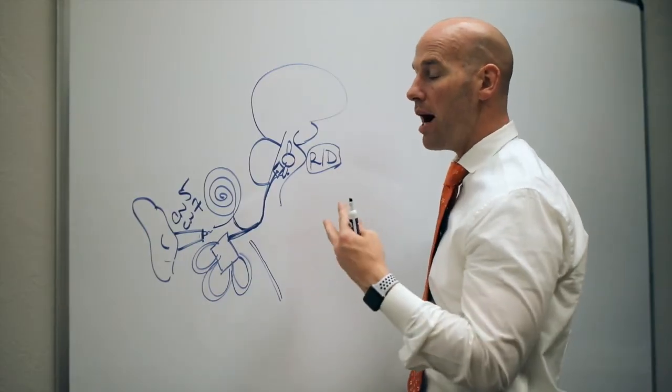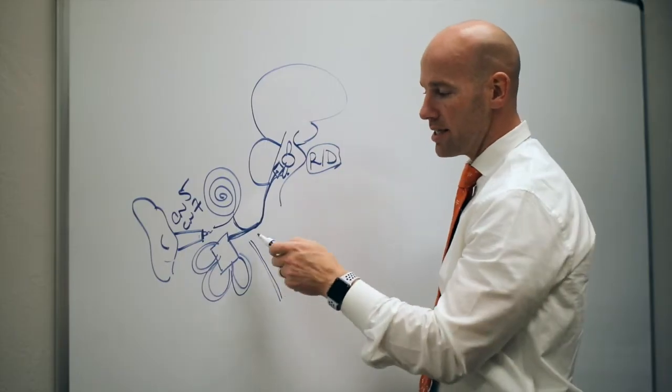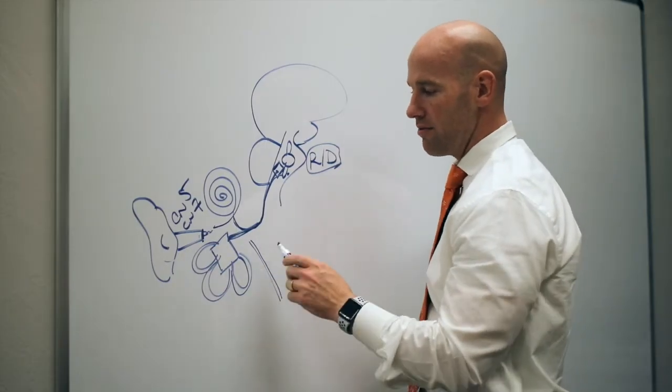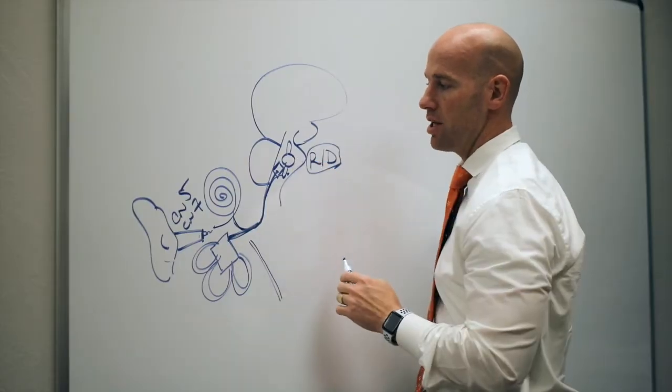And so that's why people will pop their ears, so to speak, by opening their jaw to get the eustachian tube to function. But that's just using the muscles of mastication, the trigeminal nucleus.